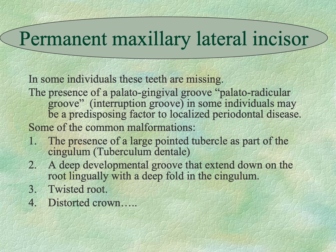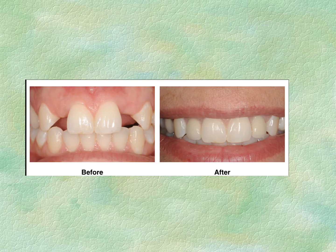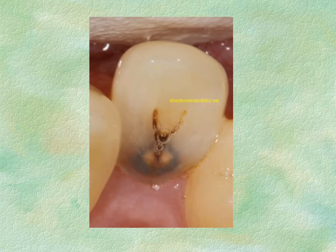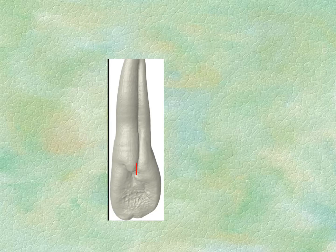Common malformations of the maxillary lateral incisor include: a large pointed tubercle as part of the cingulum (tuberculum dentale), a deep developmental groove extending down the root lingually with a deep fold in the cingulum, a twisted root, and a distorted crown. The palatal radicular groove starts at the lingual pit and extends down to the root — creating an excellent site for plaque and bacteria to accumulate and cause caries.